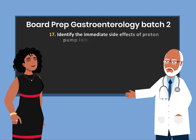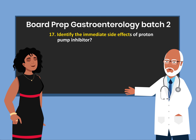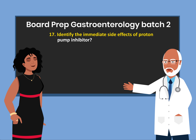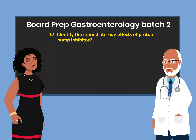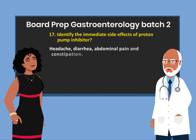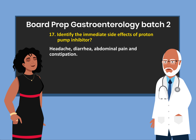Question 17: Identify the immediate side effects of proton pump inhibitors. Headache, diarrhea, abdominal pain, and constipation.